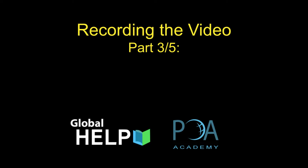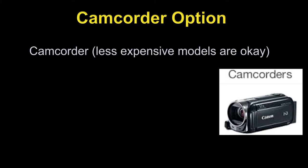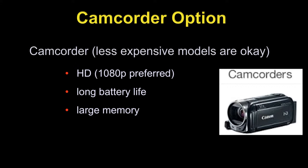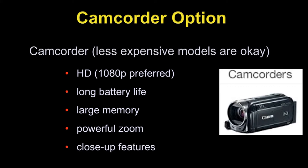This next segment is on recording the video, part 3. What are the options? The first is using a camcorder. Camcorders become progressively less expensive, and even the inexpensive ones are really satisfactory. They provide high definition, long battery life, large memories, powerful zooms, and close-up capability.